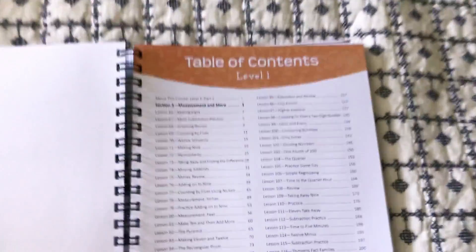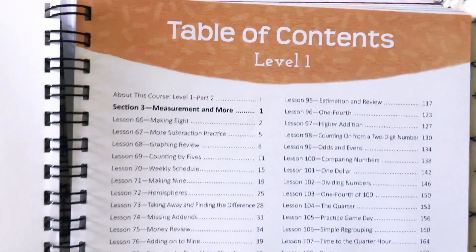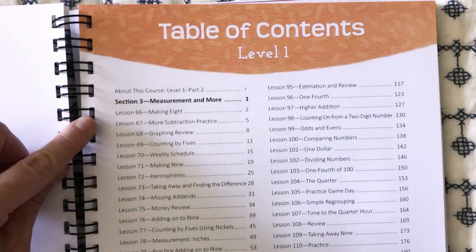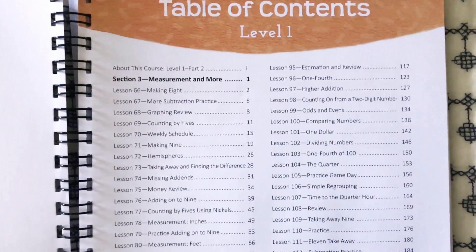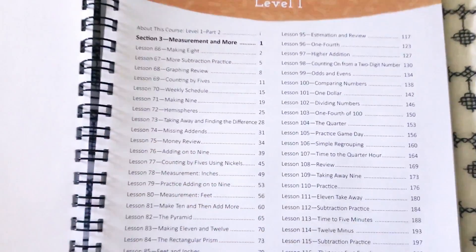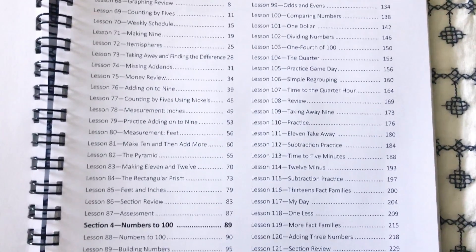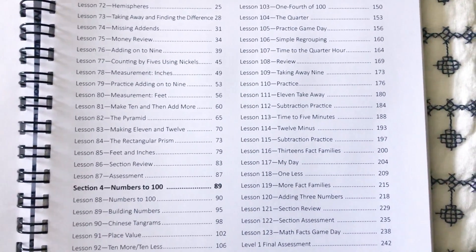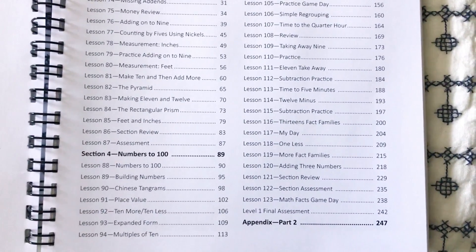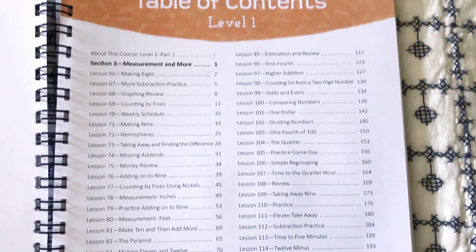Let's go to the table of contents. So here we go. You can kind of see what they're going to be teaching: Measurement, subtraction, graph review, counting by fives, weekly schedule, making nine. I'm just going to kind of go down and you can see what - and you can pause it if you need to. What is included in Math 1, Part 2? And I know there were a lot of you guys that honestly, you just maybe were waiting for Part 2. So I know a lot of you are excited about this.